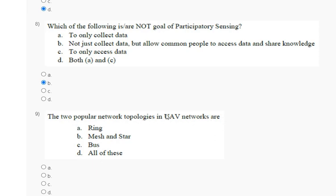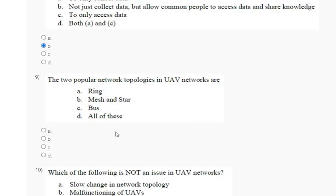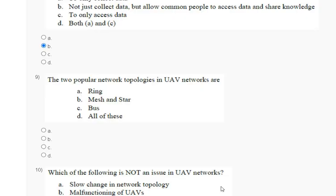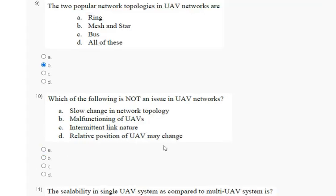Question nine: the two popular network topologies in UV networks are — options: A) sink, mesh, and star; B) mesh and star; C) bus; D) all of these. The explanation: the feature of UV networks includes mesh and star network topologies. The correct answer for question nine is option B.